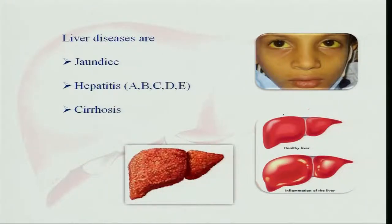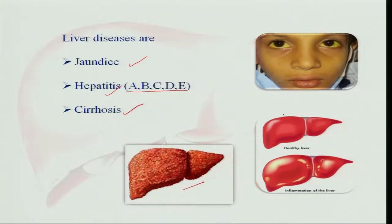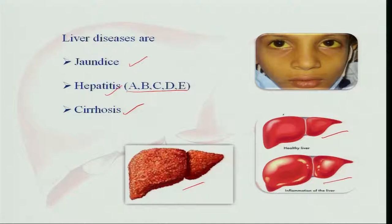Liver diseases include jaundice, hepatitis — which can be caused by different viruses like A, B, C, D, and E — and cirrhosis. You can see the cirrhosis liver with nodules, then inflammation of the liver, and a healthy liver which is fresh and of normal size. In jaundice, you can see the yellow discoloration of skin and eyes.